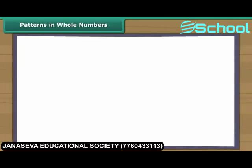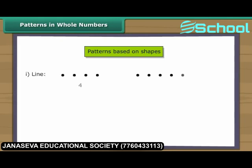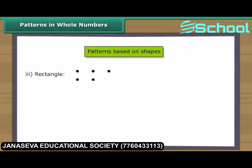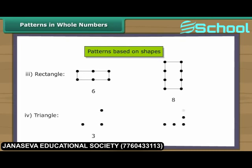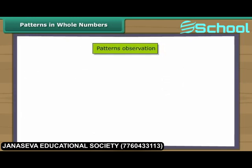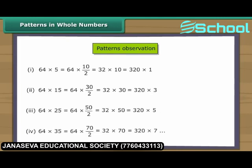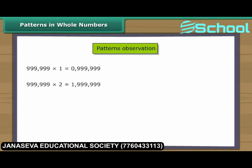Patterns in whole numbers: Numbers can be arranged in some elementary shapes using dots. The shape could be a line, square, rectangle, or triangle. Every number can be arranged as a line. Some numbers can be arranged as squares. Some numbers can be arranged as rectangles — either a horizontal or a vertical arrangement. Some numbers can be arranged as a triangle. Sometimes a pattern is observed in whole numbers which can help in simplifying the calculation process.